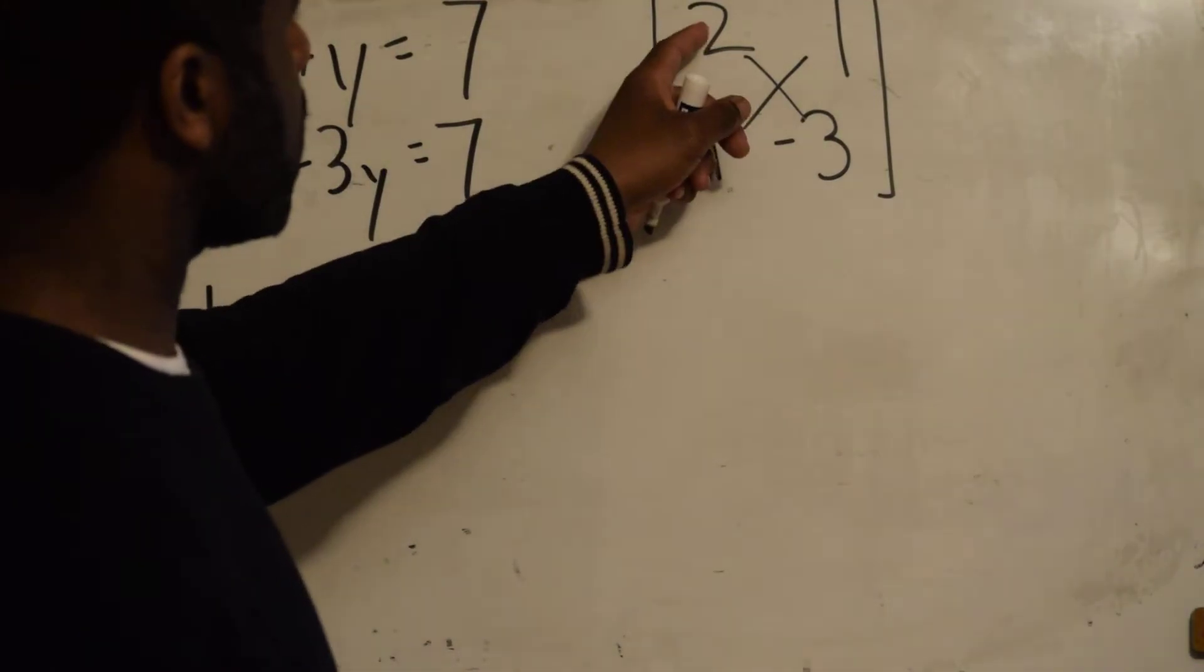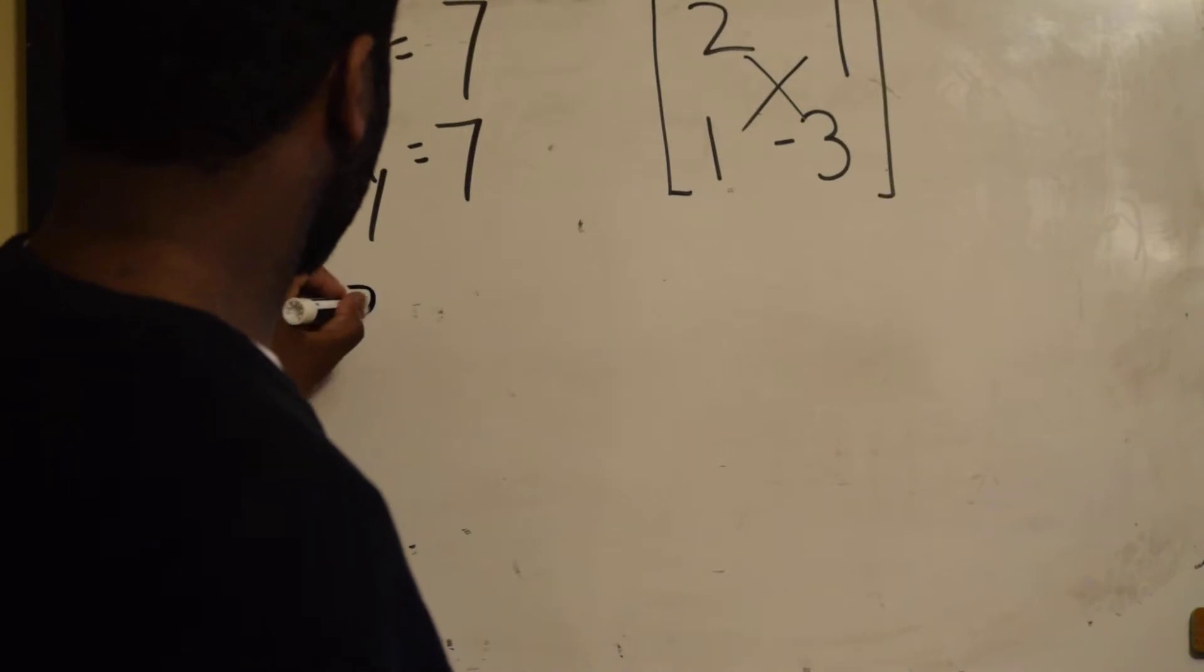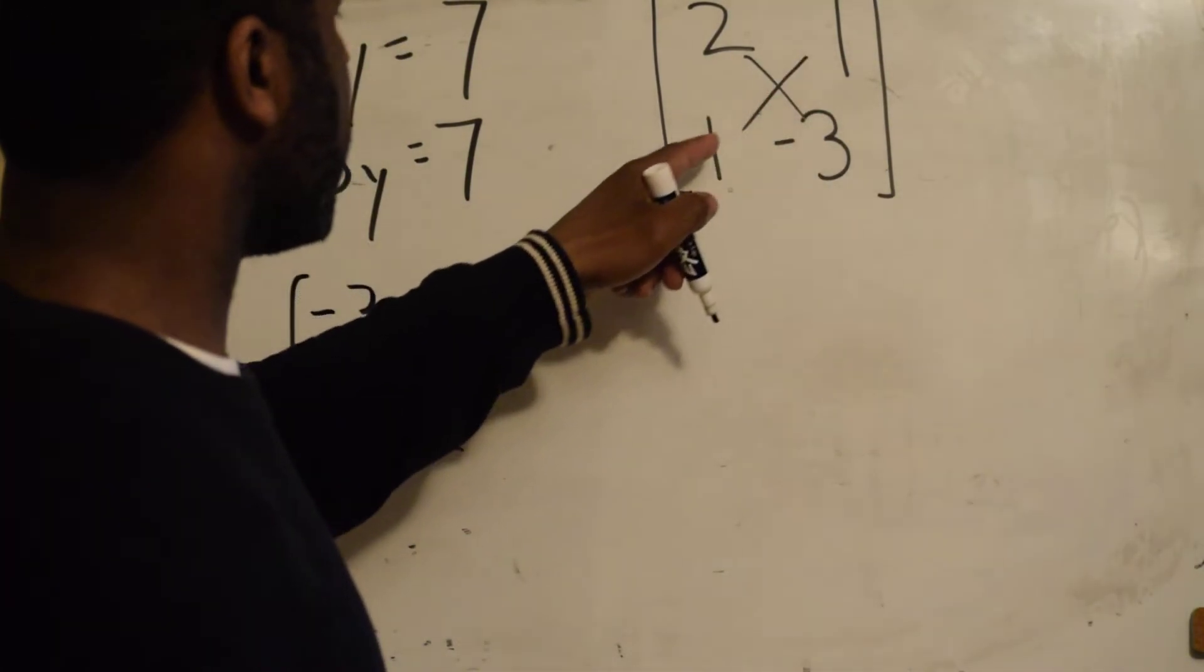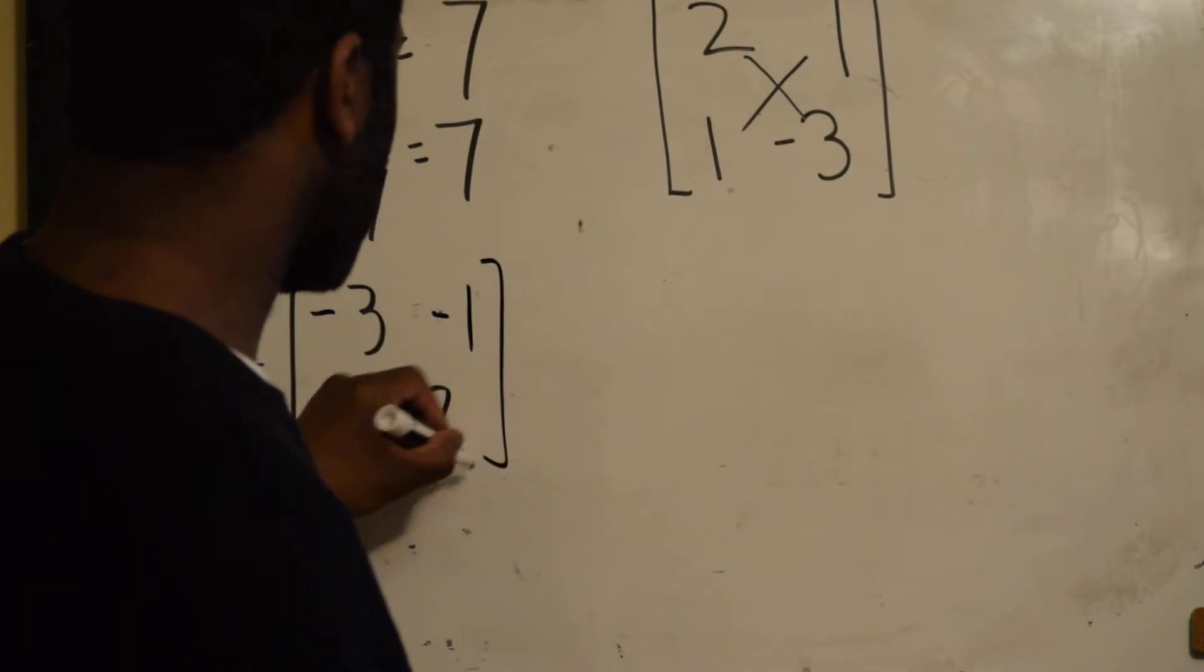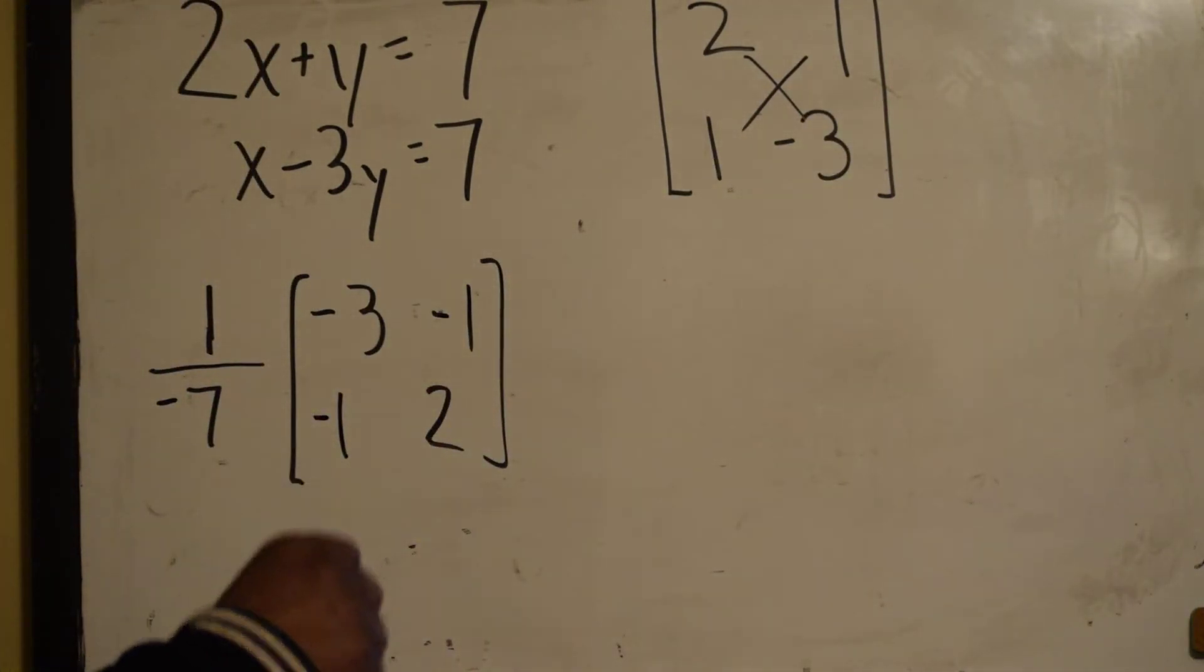Now remember, the 2 and the negative 3 essentially switch places. And the 1 and the 1 would negate those, so we turn them negative. Had they already been negative, we would have turned them into positives.